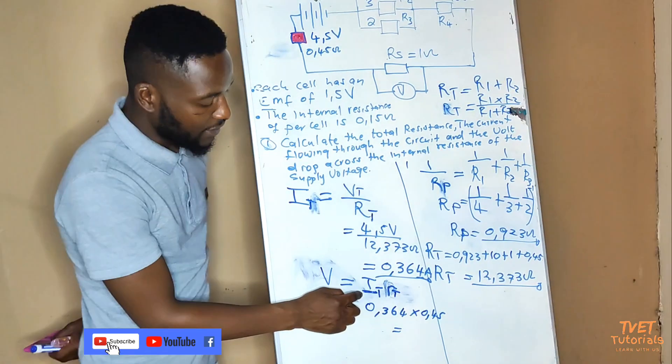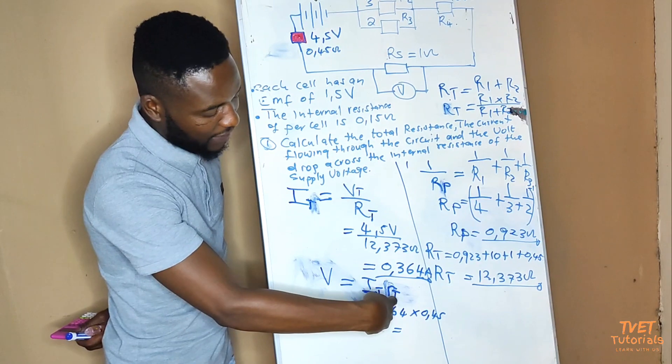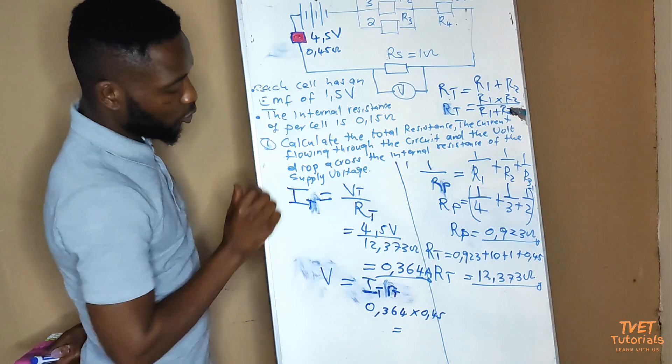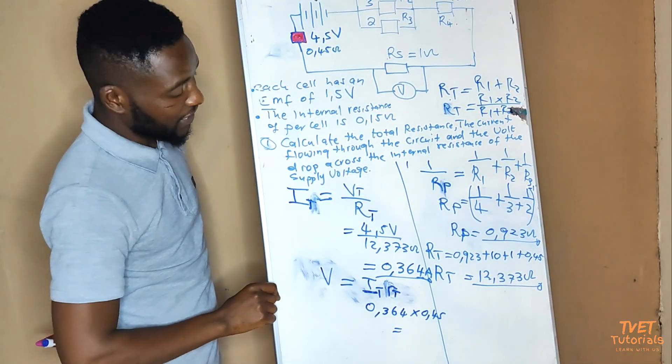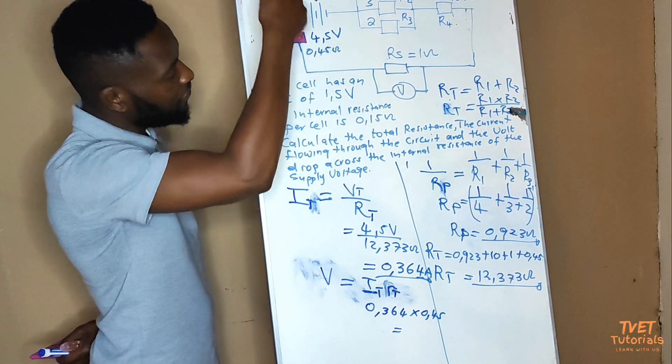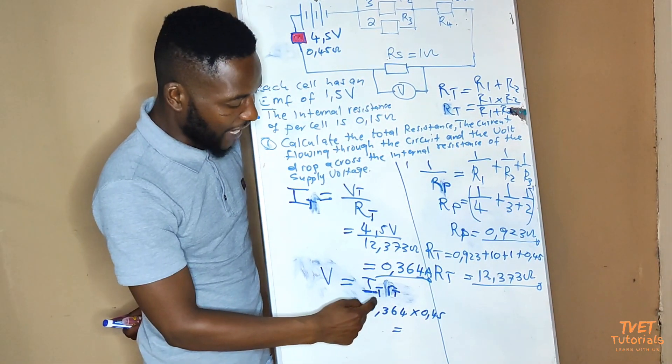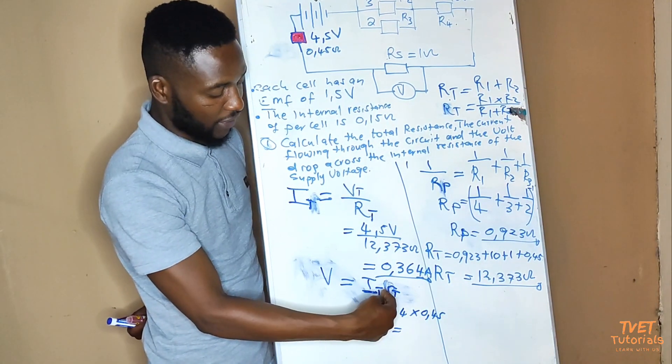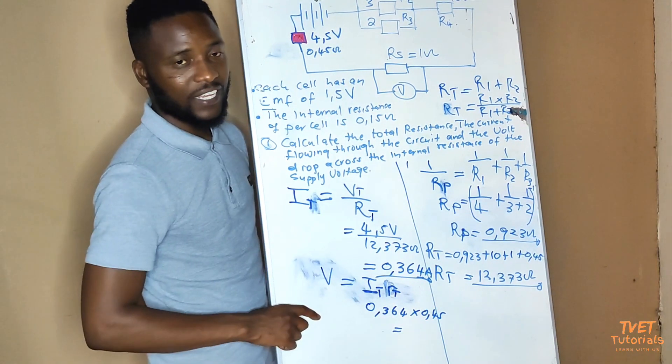I repeat again, the reason why we are multiplying the total current by the small letter r is because the supply that produces the current is connected in series with the internal resistance, and therefore, the current that will flow through the internal resistance is the total current. So that's why we have IT multiplied by the value of the internal resistance. This product gives us what we call the voltage drop across the internal resistance.